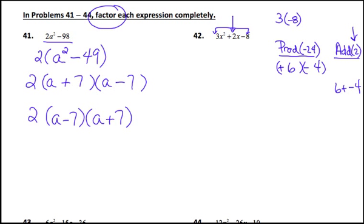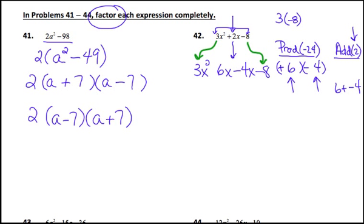What you do now is replace the middle term, the 2x, with a 6x and a minus 4x. A 6x minus 4x is a 2x. Then you bring down the minus 8 and the 3x squared. This 6x was positive, so let's get the plus sign in there. You've now made this into a four-term problem.